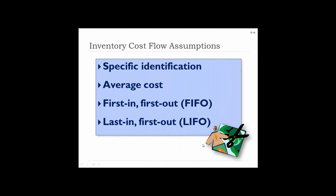Now we're going to talk about inventory cost flow assumptions. We're going to cover specific identification, average cost, FIFO — also known as first in, first out — and LIFO, also known as last in, first out.